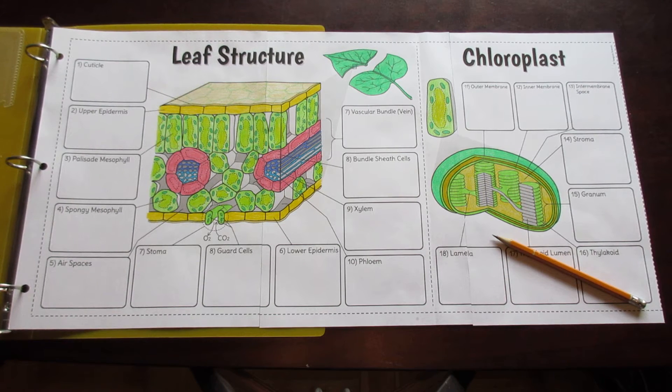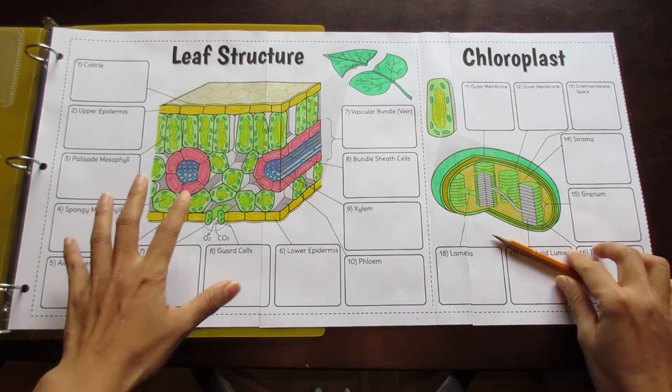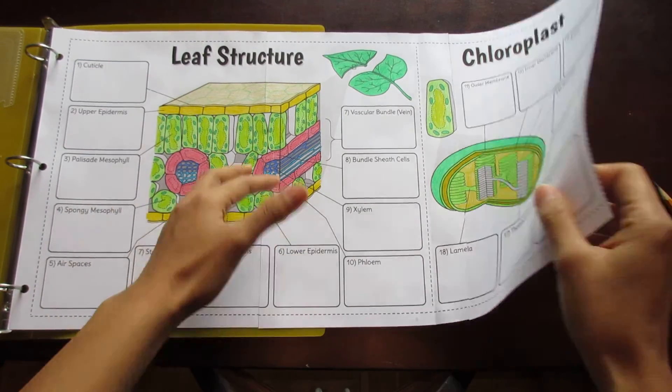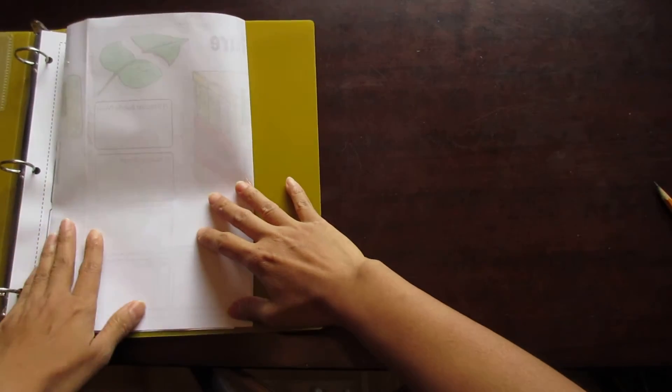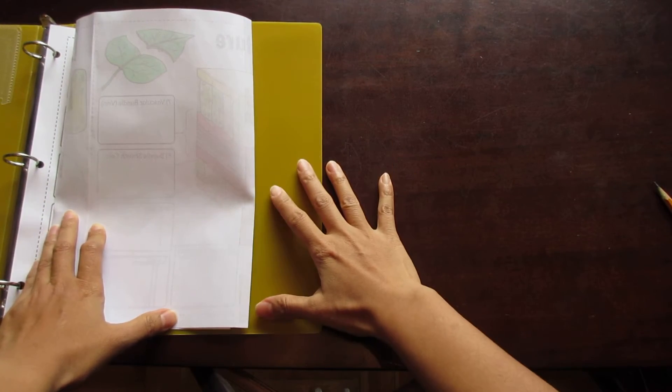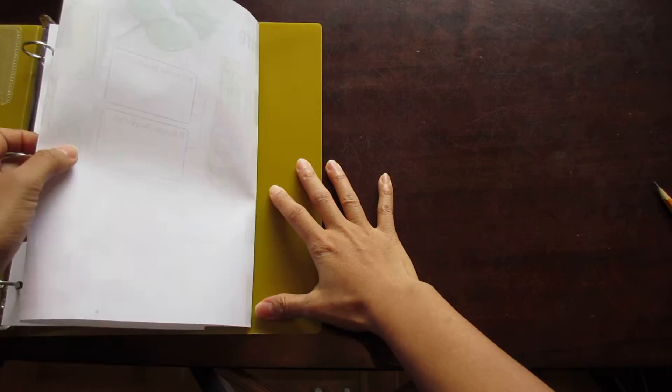This is the big leaf and chloroplast foldable by Tang Star Science. Big in this case refers to three pages which when cut along the seams and folded creates a foldable that fits neatly into a binder without impeding the binder rings.